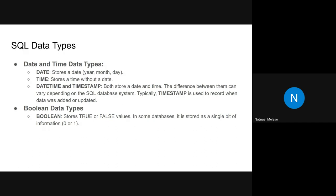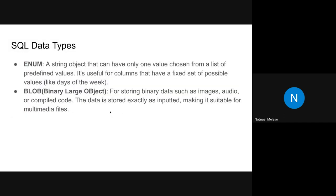Moving on to the boolean data type: boolean stores true or false values. In some databases, you might store 0 and 1 using a single bit, where 0 means false and 1 means true.